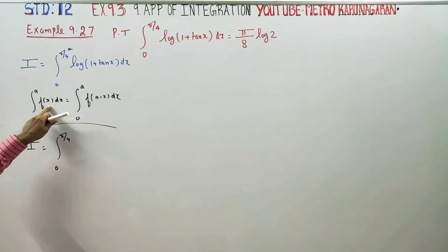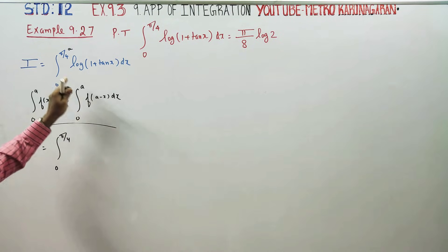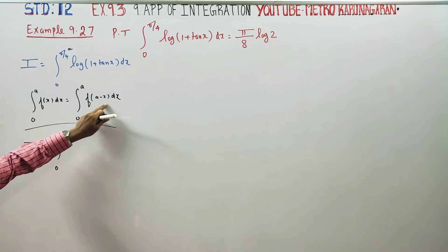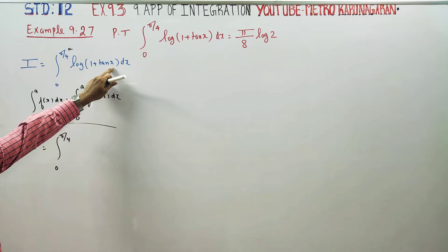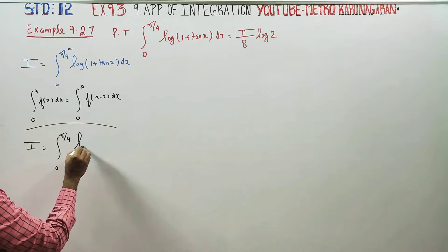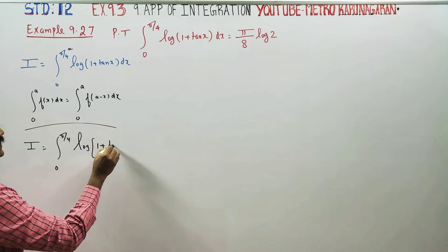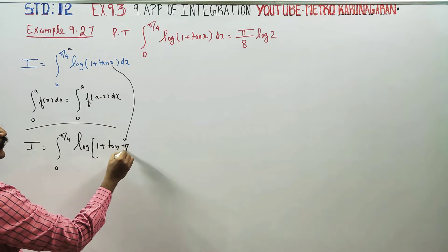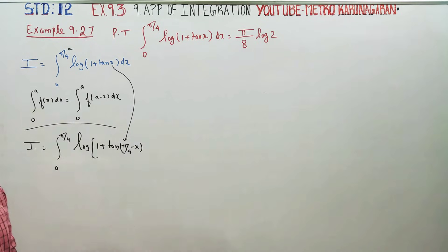Applying the property, we replace x with a minus x, that is pi by 4 minus x. Now substitute this value into the integral.